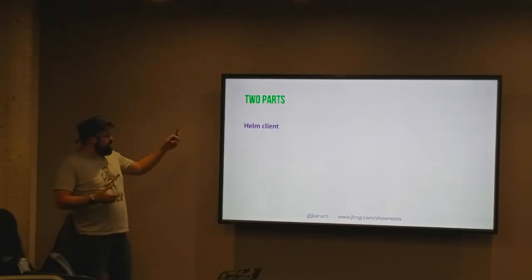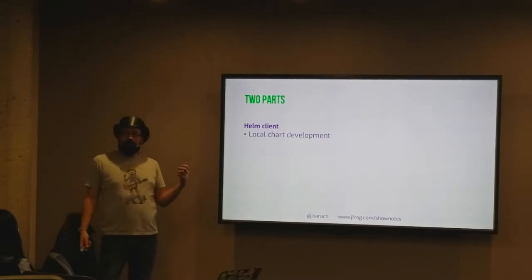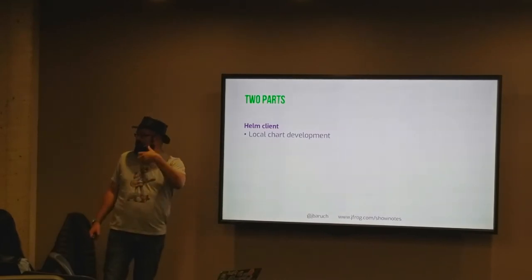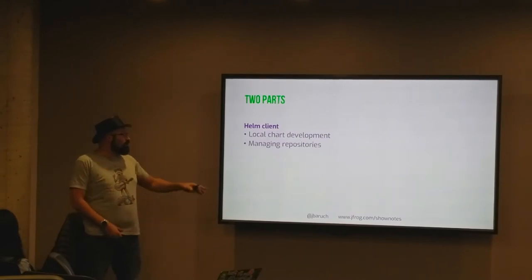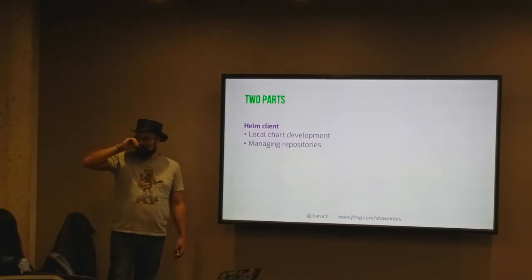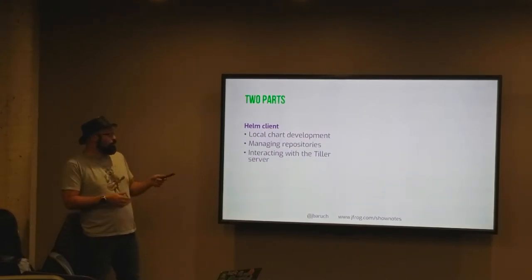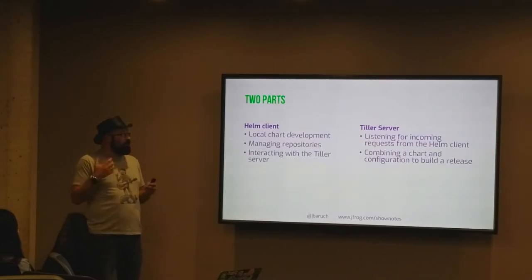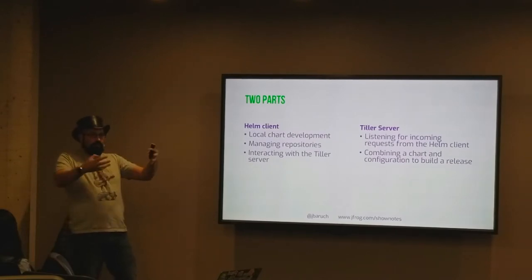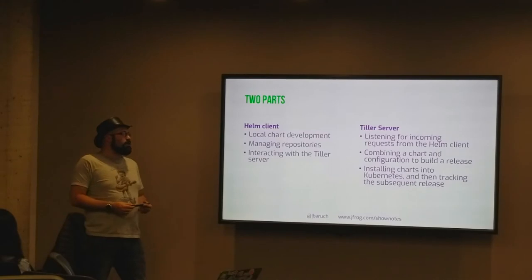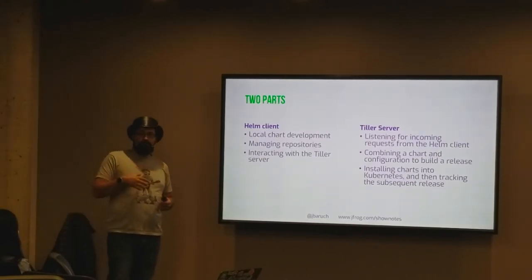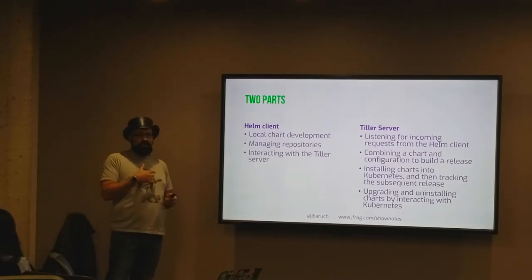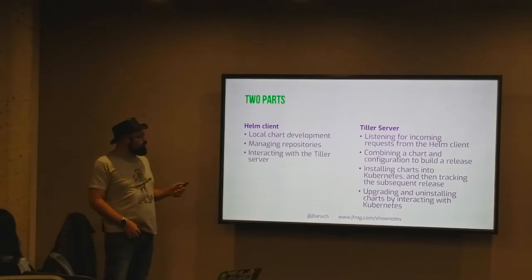The Helm client packs your services into a Helm chart - the `.tgz` with all templates and values. You manage repositories on the client, telling it which repositories to work with. The server part - Tiller - takes commands from the client, combines the chart and configuration to create a release, installs it into Kubernetes, and handles upgrades, rollbacks, and deletions by interacting with Kubernetes itself.